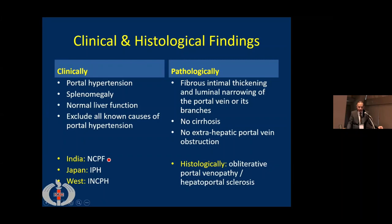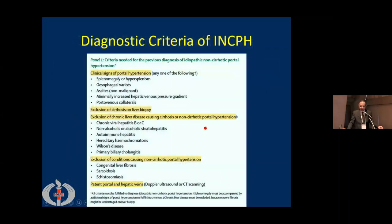The term in India is NCPF; in Japan, idiopathic portal hypertension; and in the West, idiopathic non-cirrhotic portal hypertension. Diagnostic criteria require clinical signs of portal hypertension, exclusion of cirrhosis on liver biopsy if possible, exclusion of other causes such as chronic hepatitis B, autoimmune disease, congenital hepatic fibrosis, sarcoidosis, and confirmation that the portal and hepatic venous system is patent.